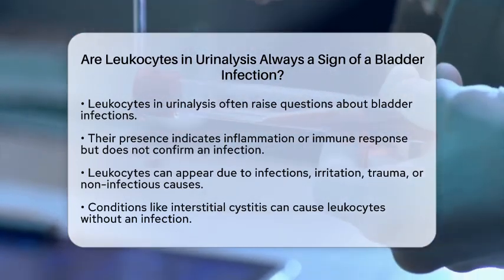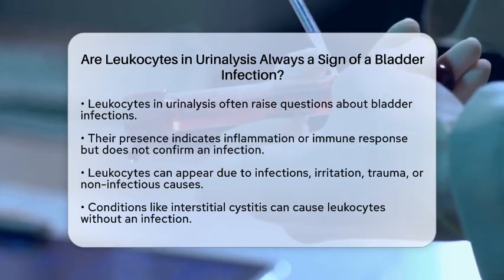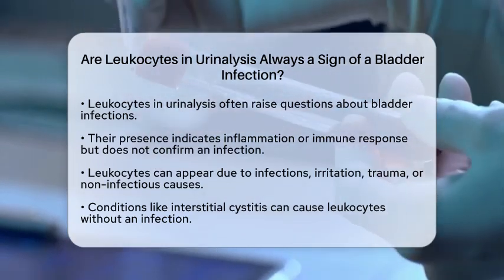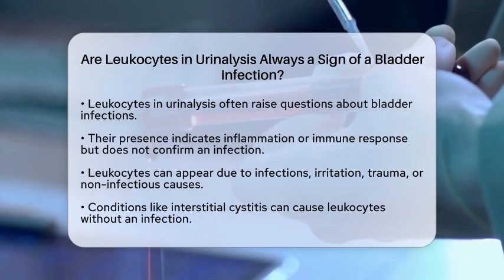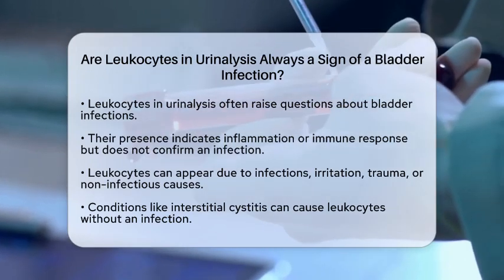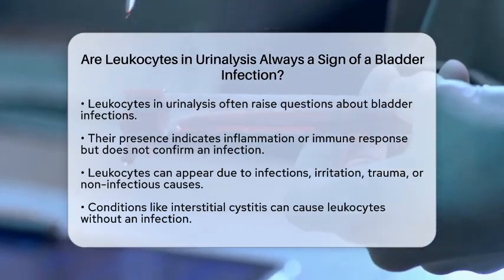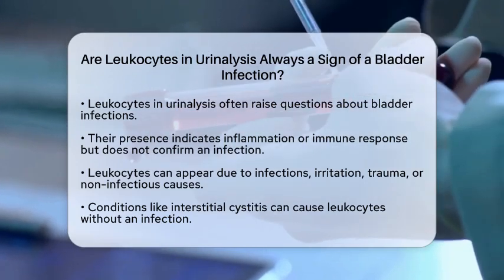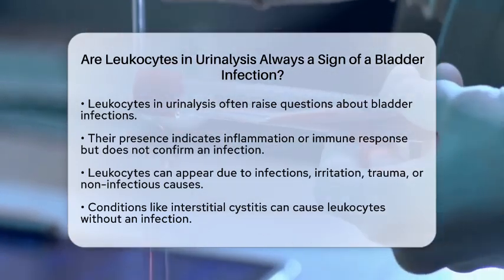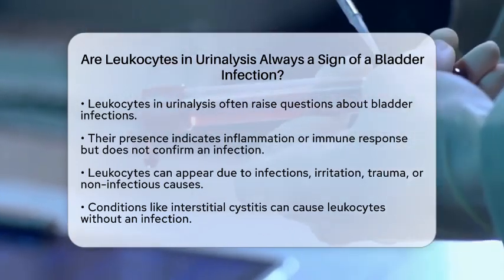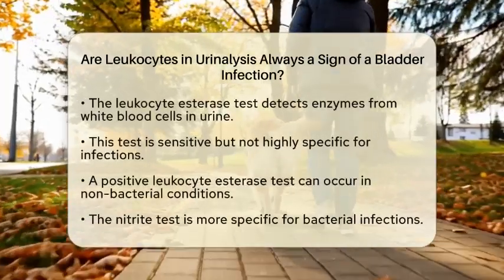Leukocytes can appear in urine for several reasons. They typically respond to infections, but they can also increase due to irritation, trauma, or other non-infectious causes affecting the bladder or urinary tract. For example, conditions like interstitial cystitis can cause inflammation without any infection present.